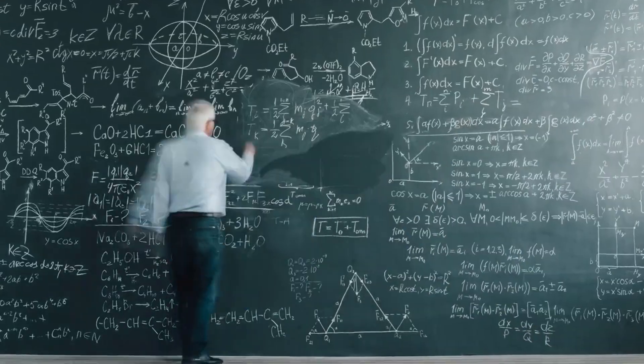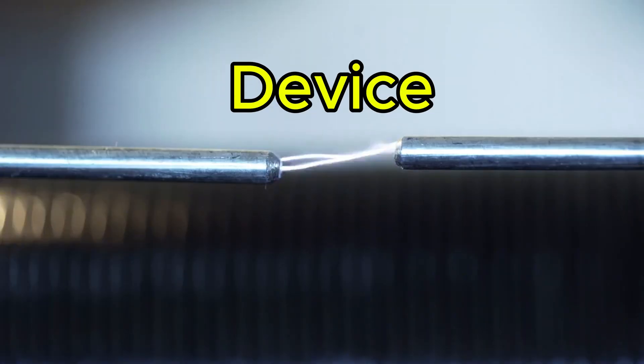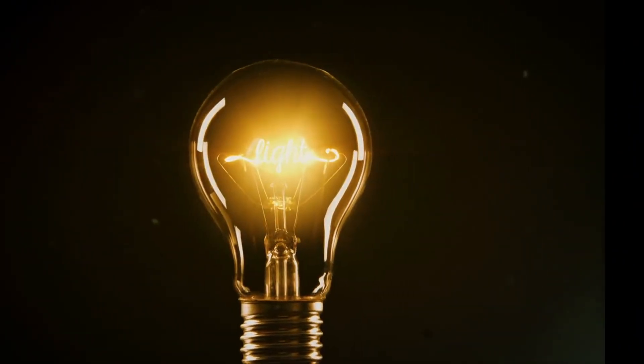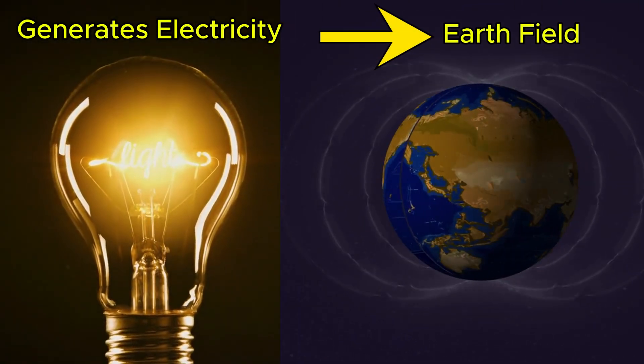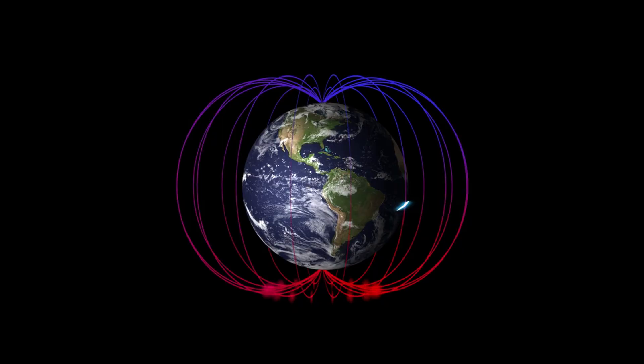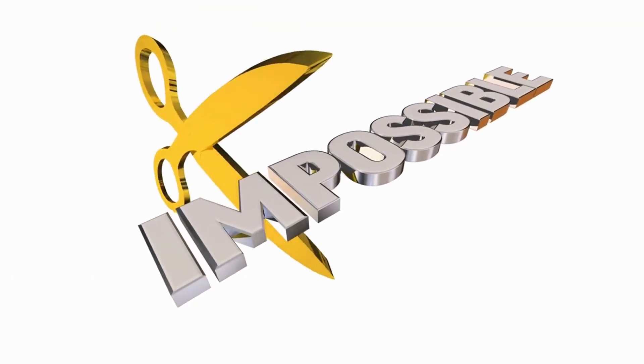What if I told you that scientists have just demonstrated a device that generates electricity directly from the Earth's own magnetic field, powered only by the planet's rotation? Sounds impossible, right?